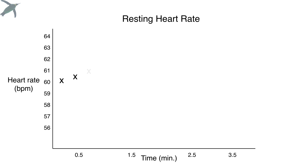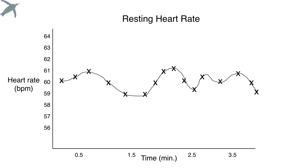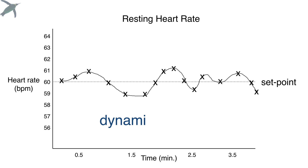As you sit very quietly doing absolutely nothing, your heart rate is going to be changing — it is dynamic. It is going up and down and up and down even though you're just sitting there. This is surprising to a lot of people. If you were to connect the dots, you're going to get something that looks like this: the data are constantly changing, but they are going up and down around what we call a set point value. This is the idea of dynamic constancy.